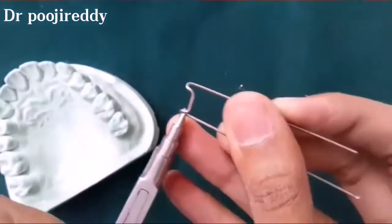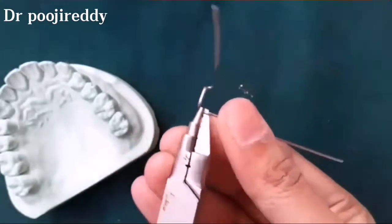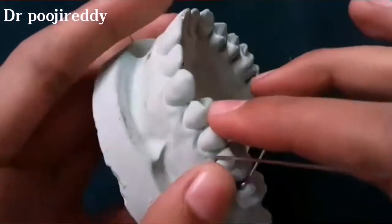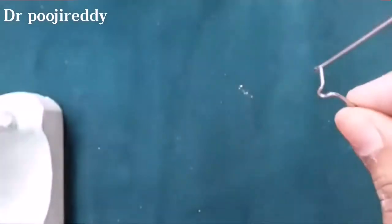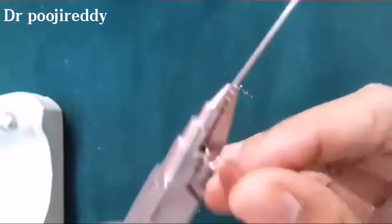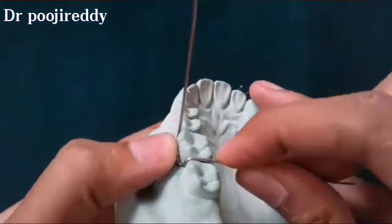Now the tip of the universal plier's beak is placed in half of the arrowhead and bend. Now by placing the universal plier onto the bridge of the Adams clasp, adjust the free end to rest in between the tooth surface.